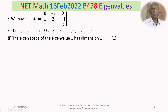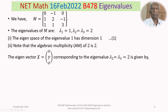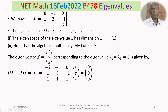Now for lambda2 = lambda3 = 2, the algebraic multiplicity is 2. Let the eigenvector be x = (x, y, z). The eigenvector equation is (M - 2I)x = 0. Subtracting 2 from the diagonal entries of M gives the matrix for (M - 2I), and we solve for (x, y, z).